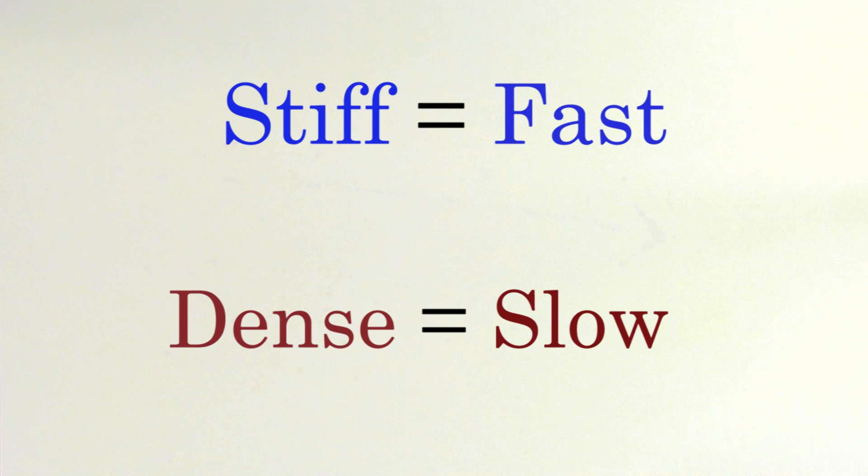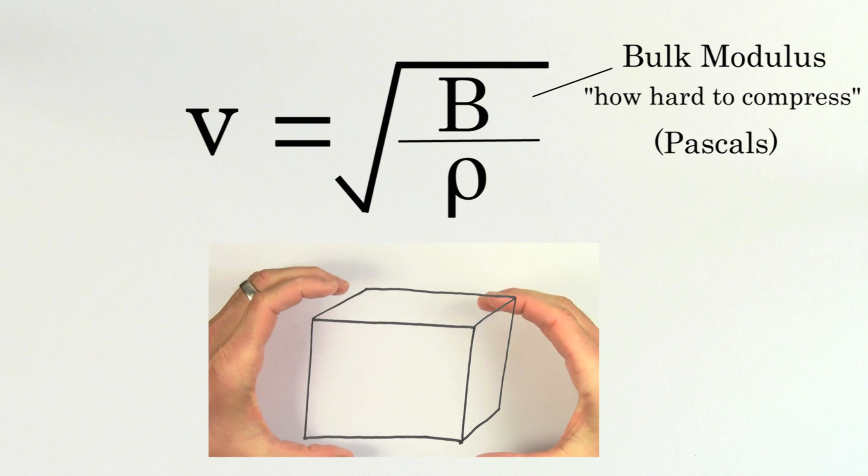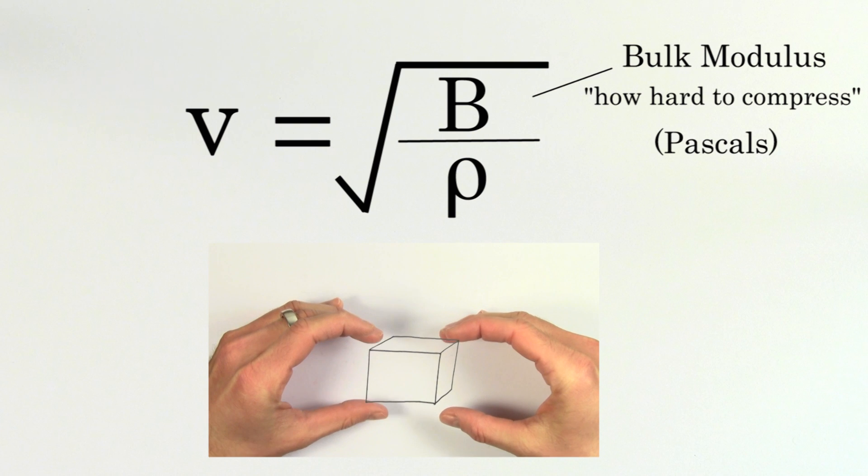These two factors are taken into account with this formula. V is the speed of sound. Capital B is called the bulk modulus of the material. The bulk modulus is the official way physicists measure how stiff a material is. The bulk modulus has units of pascals because it's measuring how much pressure is required to compress the material by a certain amount.